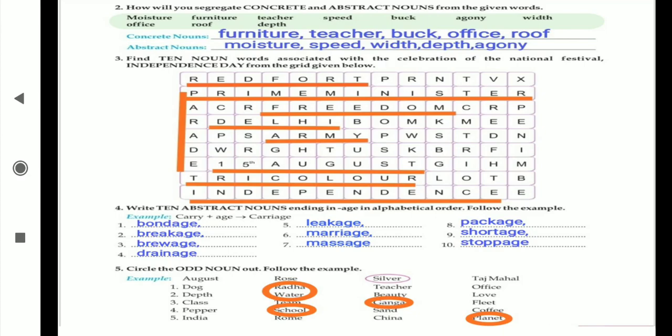These are the concrete nouns. And abstract nouns are: moisture, speed, width, depth, and agony.